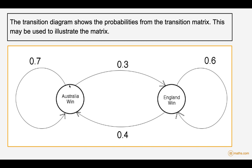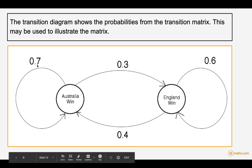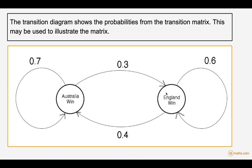You will sometimes see a transition diagram like this. If Australia win and win again, this loops back into Australia winning with probability 0.7. If Australia win and then England win, that's 0.3. These two add up to one. If England win, there's a 0.6 chance they win again and a 0.4 chance the state changes to Australia winning. This is called a transition diagram.